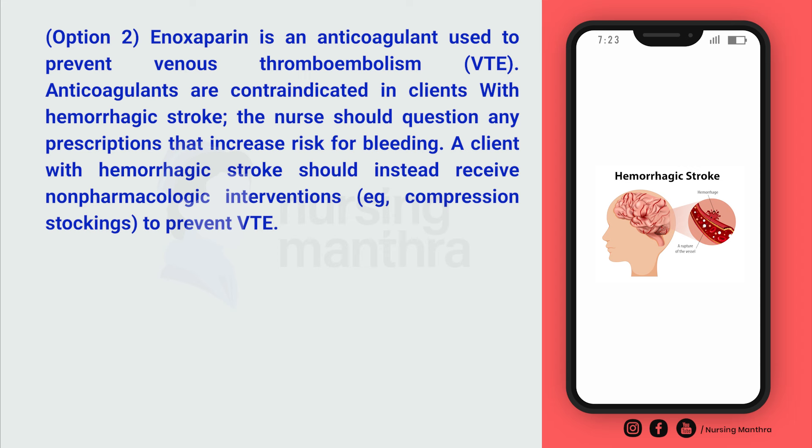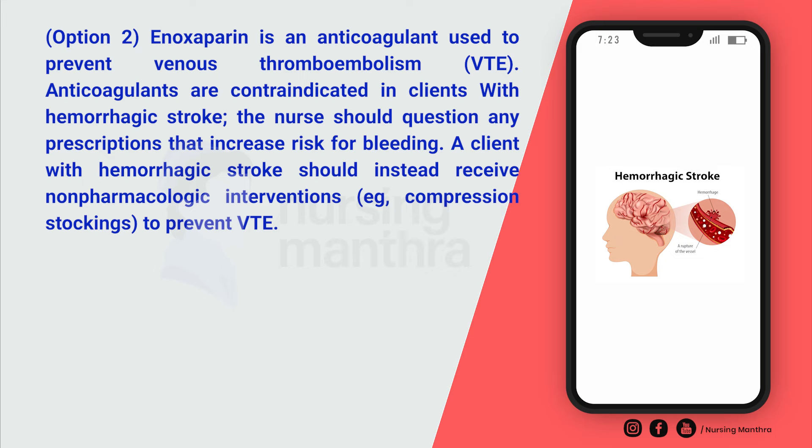In conclusion, hemorrhagic stroke occurs when a blood vessel ruptures inside the brain, causing bleeding. The nurse should perform frequent neurological assessments, keep the client NPO, maintain seizure precautions and strict bed rest, and limit any activity that increases bleeding — such as anticoagulant administration — or intracranial pressure elevation, including stimulation and straining during bowel movements. I hope you understood clearly regarding hemorrhagic stroke interventions by the nurse.